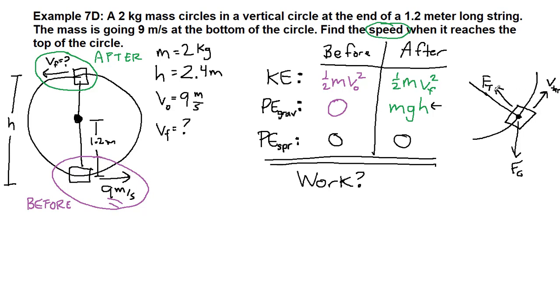There's always this 90 degree angle here, which means tension cannot provide a work term. It is a force that exists, but it is not a force that is ever in the direction of motion, so there's no work term from that.